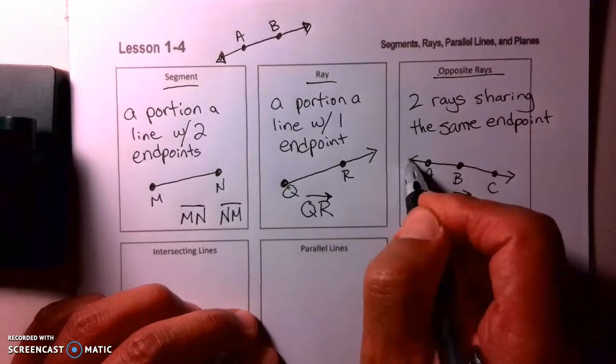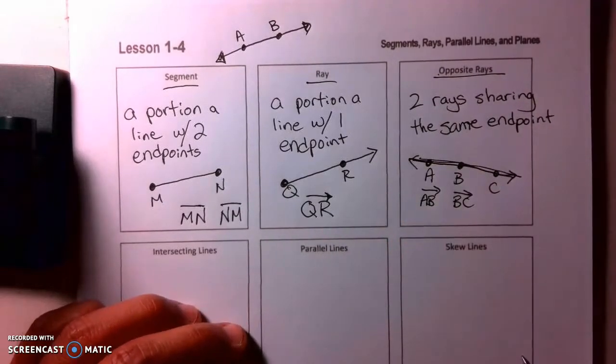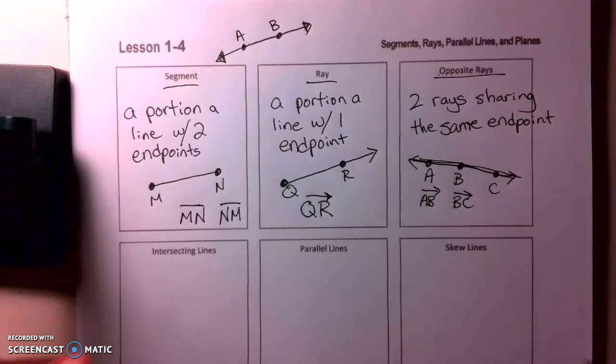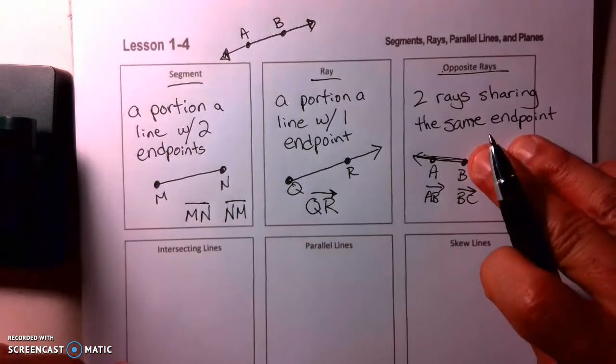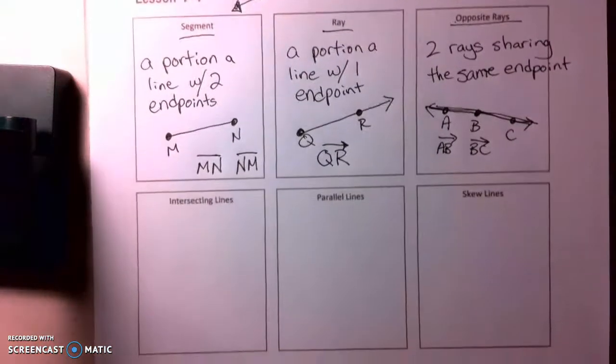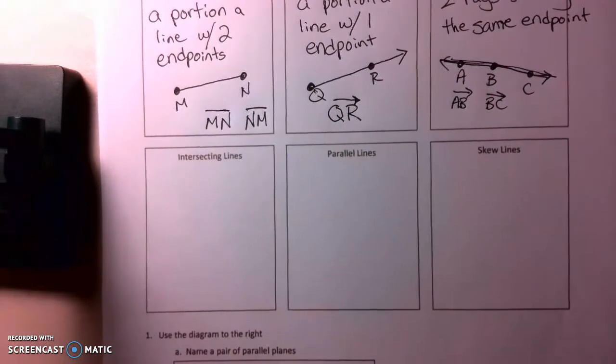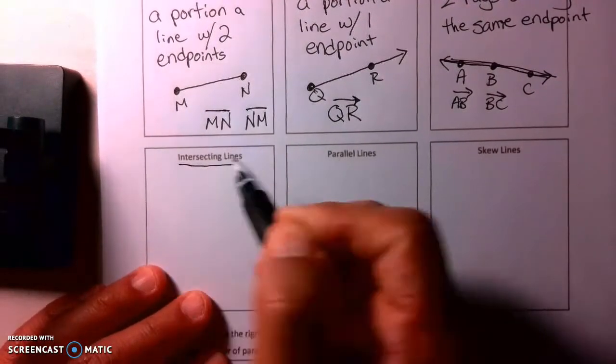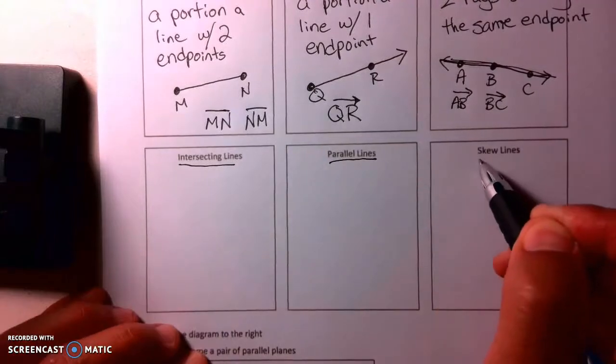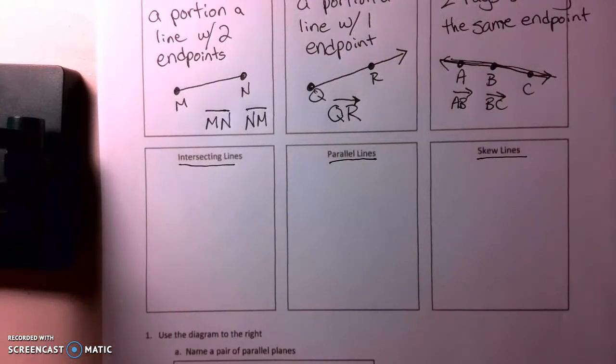But technically, they're opposite rays. That's one of the rays, and that's the other ray. Okay, this next group of boxes here, there is intersecting lines, there are parallel lines, and there are skewed lines.